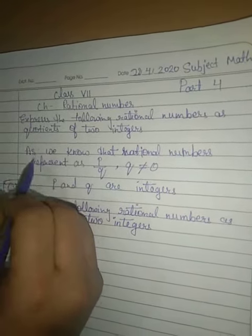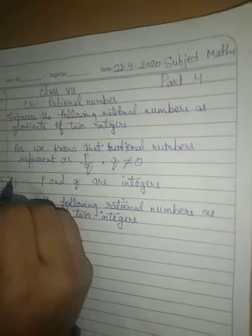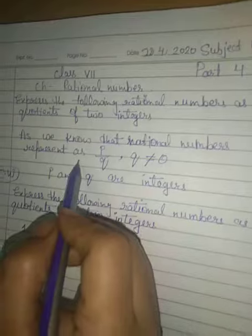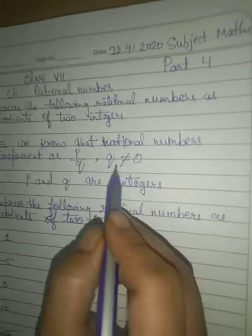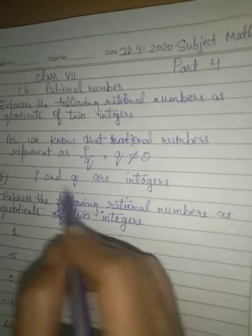Today we will express the following rational numbers as a quotient of two integers. As we know, rational numbers are represented as p upon q, where q does not equal to 0, and p and q are integers.